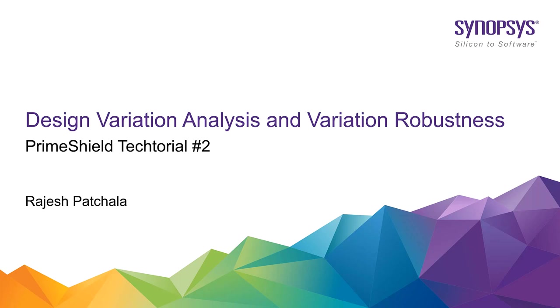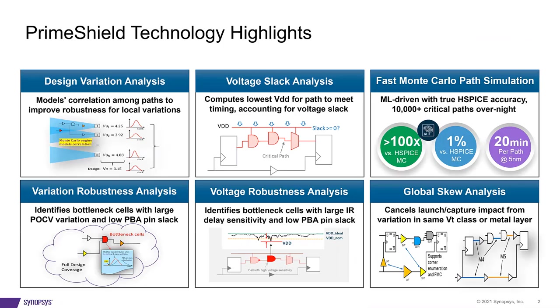We'll look at a few examples to understand the concepts and the value these technologies deliver in terms of PPA. Prime Shield has several features to analyze timing and voltage variation of the design. The first two features shown on the left side are design variation analysis and variation robustness analysis. Both these features require POCV LVF libraries to perform the analysis.